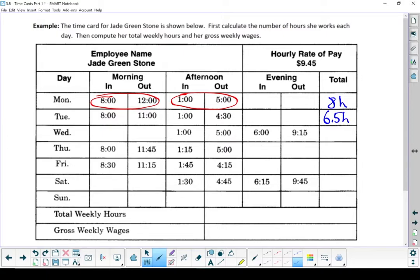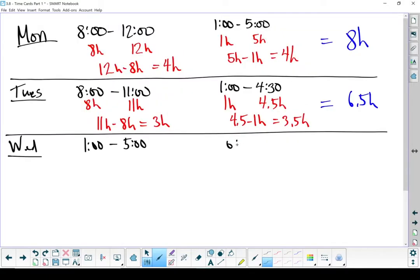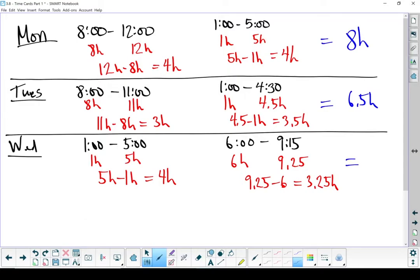Let's move on to Wednesday. Turn those into decimals, subtract the first one from the second one. That gives her 4 hours in the afternoon before she went for her supper break. Let's do the evening shift. 9:15, well that's going to be 9 hours and 15 minutes. We're going to write that as 0.25 because that's a quarter hour. Let's subtract the 2. Gives me 3.25 hours. Add those two together gives me 7.25 hours. Put that in our chart.